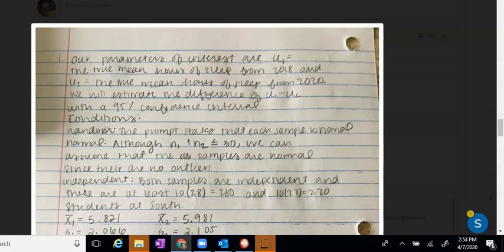On to the other question about the hours of sleep that the students get at Park Hill South. This is Sarah's work. Nice job here. She clearly defines her parameters with mu1 and mu2. Mu1 is the true mean of the hours of sleep from 2018 Park Hill South students, and mu2 is the true mean of hours of sleep from you guys, actually. She clearly defines that it's the difference of these averages that we're trying to write a confidence interval for.